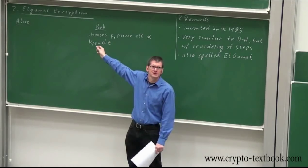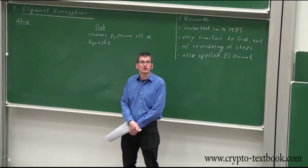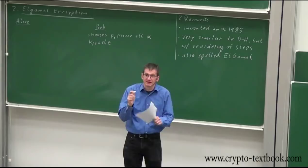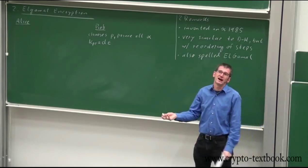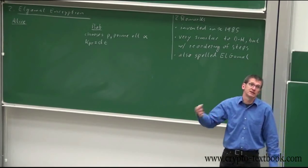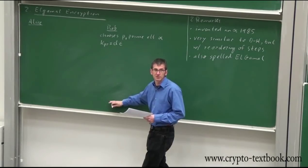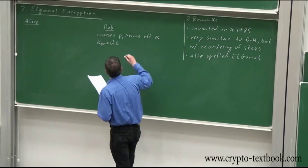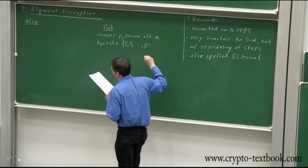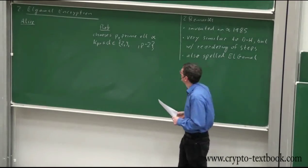Does anyone know why the private key of Bob is called D? Because he decrypts — D for decryption. It's similar to RSA where D is the decryption exponent and E is the encryption exponent. The private key D is chosen from the set {2, 3, ..., P-2}. The public key is called beta in the literature. In DL systems, what you have in the exponent tends to be the private key, and the result tends to be the public knowledge. So Bob computes beta = alpha^D mod P.